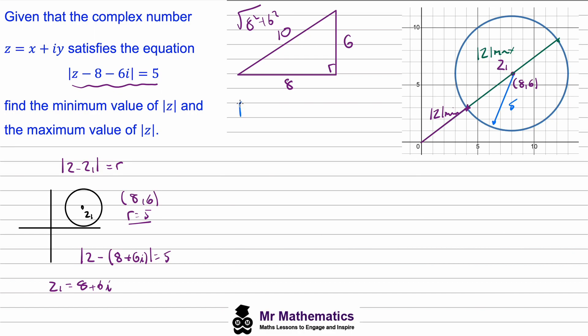And we know that this length is 5. So the minimum possible magnitude of z would be the 10 take away the 5. This will be 5 units.